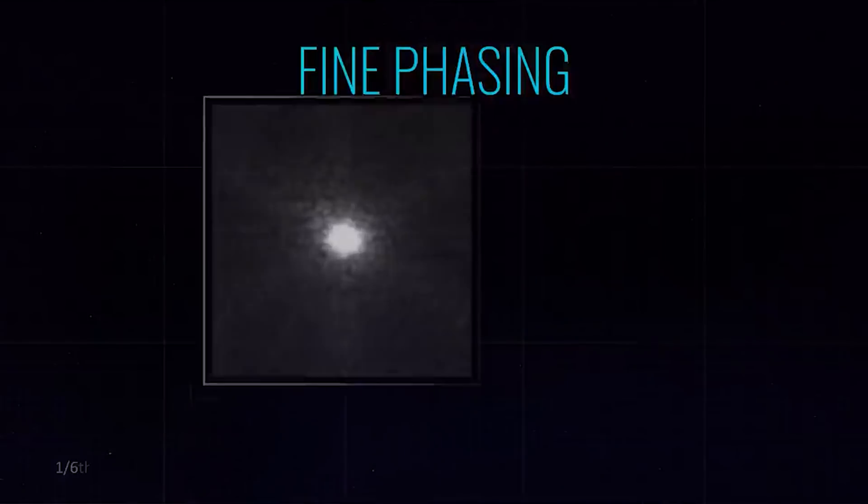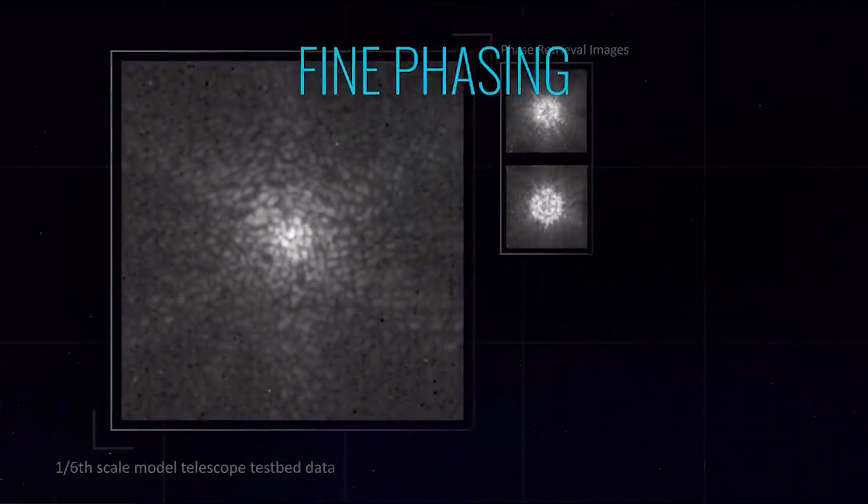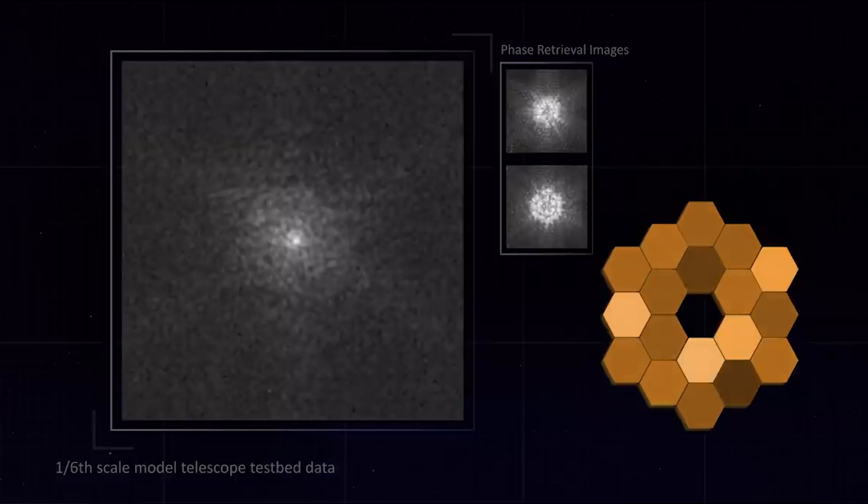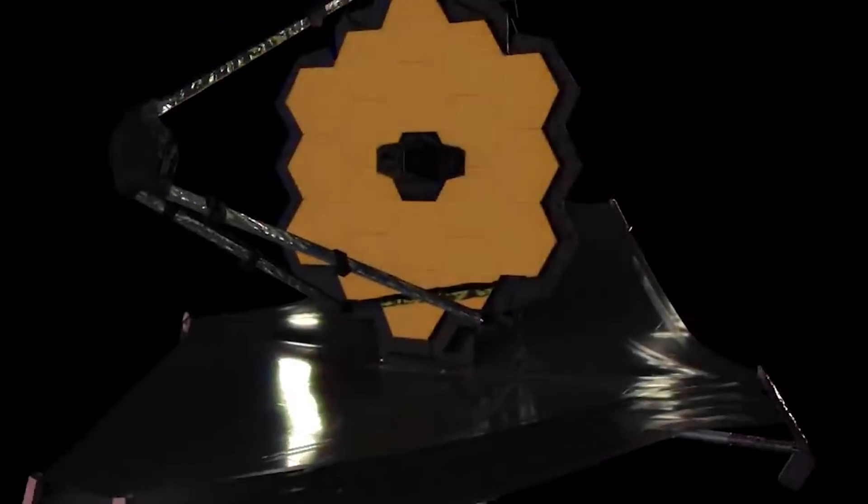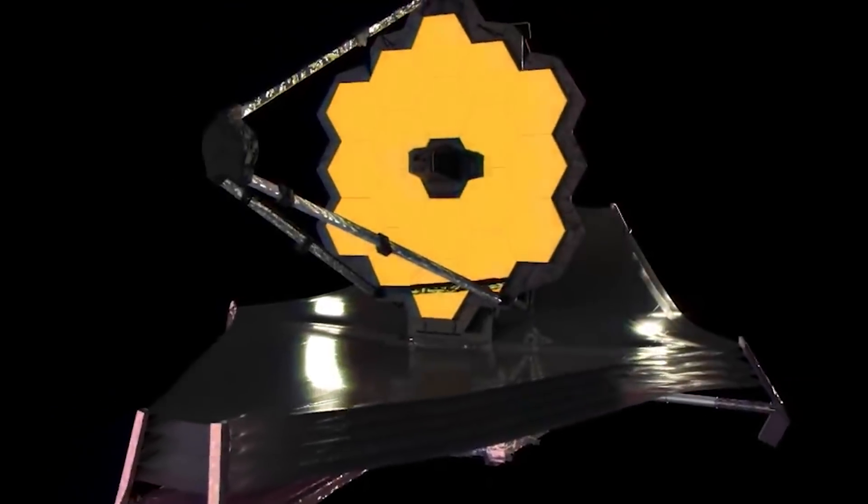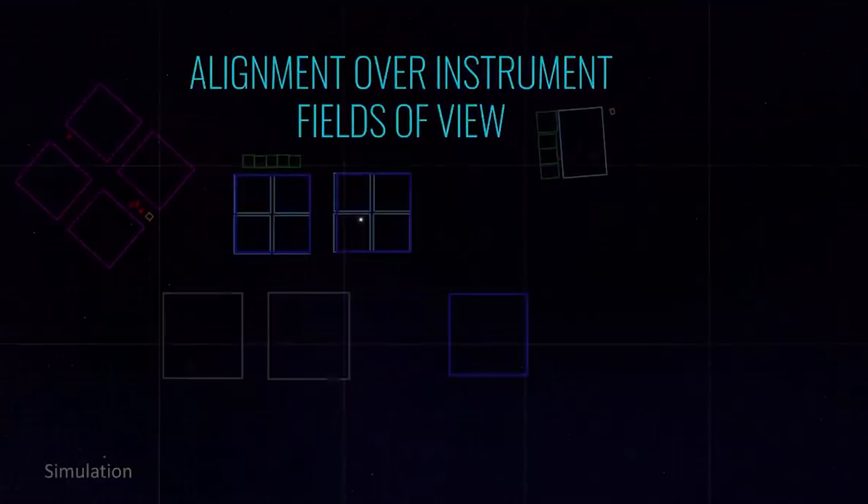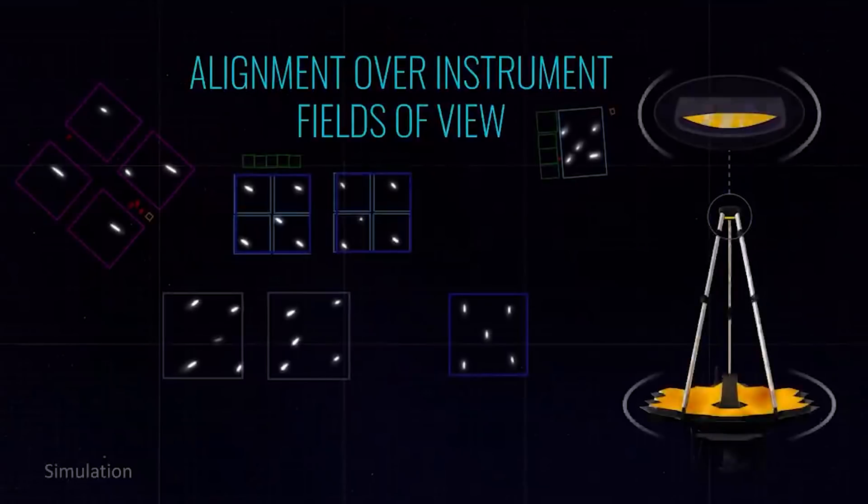The final phase is called the fine phasing phase, which is admittedly quite fun to say, and here they take the mirror as a whole as one single object, and in order to focus the image it produces they actually don't move the mirrors anymore but rather they move the lens on the detector itself inside the telescope. There are actually four detectors on board JWST and they've only done this to one of them so far, so the other ones will follow soon, but what they do is they move the detector by small amounts until it sees a perfectly clear image.